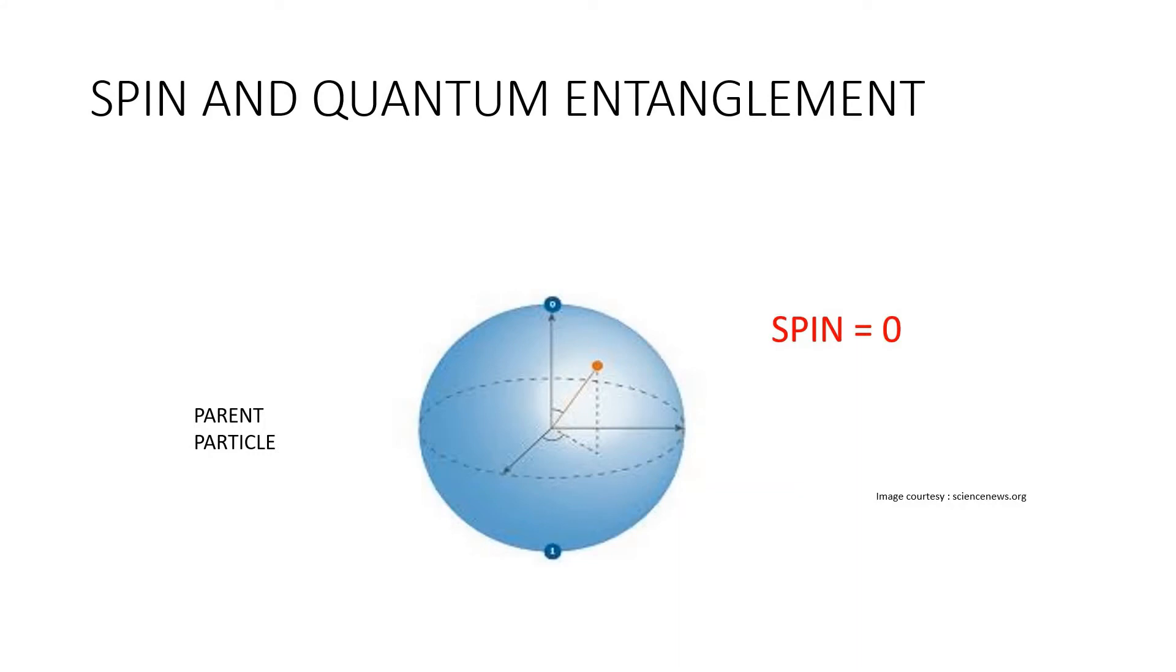Now, how is spin related to quantum entanglement? In quantum mechanics and particle physics, spin is an intrinsic form of angular momentum carried by elementary particles. Spin is one of two types of angular momentum in quantum mechanics, the other being orbital angular momentum. By law of conservation of angular momentum, spin is conserved.